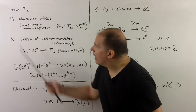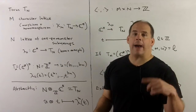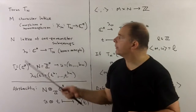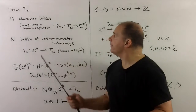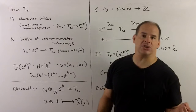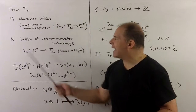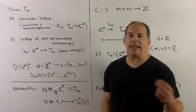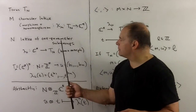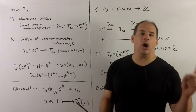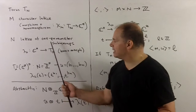As usual, we have our torus T sub n. Capital N is going to come into play. M will be the character lattice of T sub n — these are just maps into C star that are morphisms and homomorphisms. Capital N is going to be the lattice of one-parameter subgroups, which are morphisms and homomorphisms that go in the other direction, from C star into T sub n.